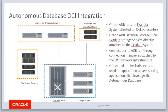When a user or other process connects to the Autonomous Database, the connections are routed through Connection Managers that distribute and manage connections into the databases in the Exadata servers. These Connection Managers are attached and connected to the OCI network infrastructure. Oracle Cloud Infrastructure physical or virtual servers that run applications that leverage databases on Autonomous Database are also a typical, but not required, component of a fully integrated Autonomous Database cloud stack.